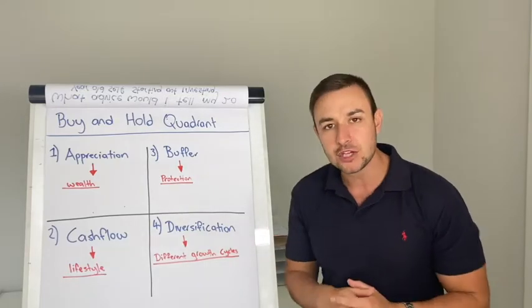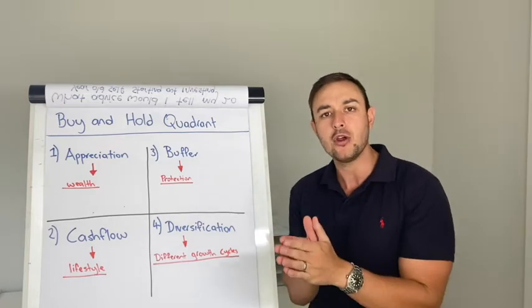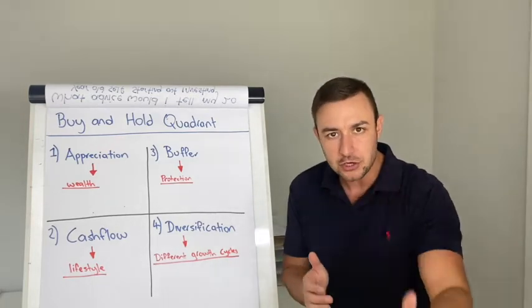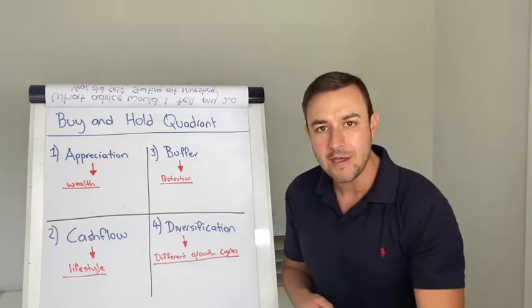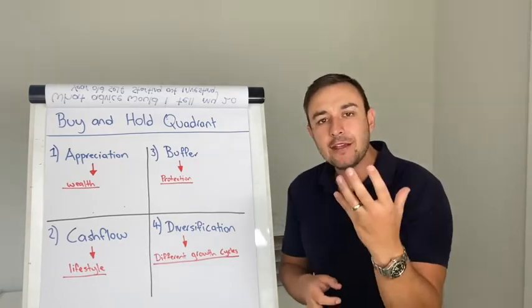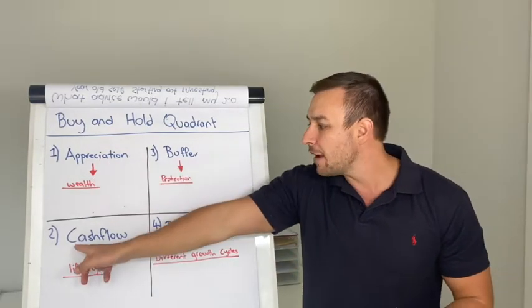And number four is diversification. Making sure that you hit different growth cycles. So when I build a property portfolio, I'm looking at diversifying that portfolio. You don't want to have everything in one state. You don't want to have everything in one location because if that location doesn't perform, you're never going to get the appreciation and you may never get the cashflow.